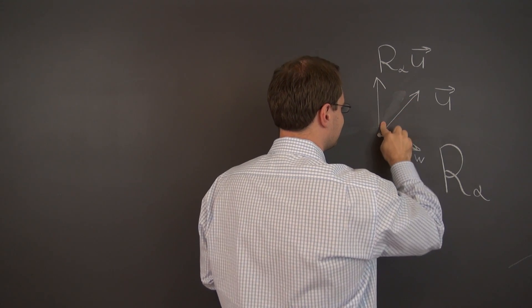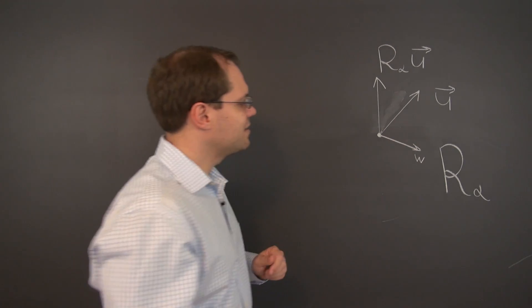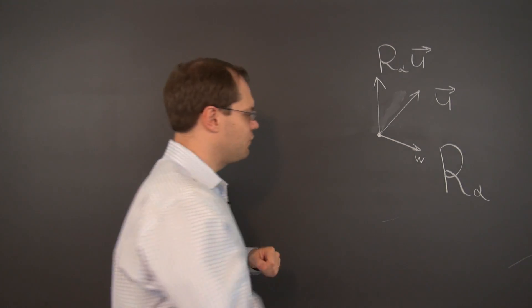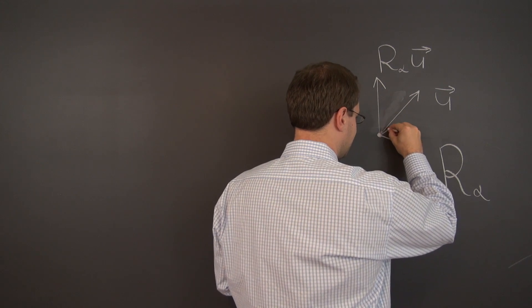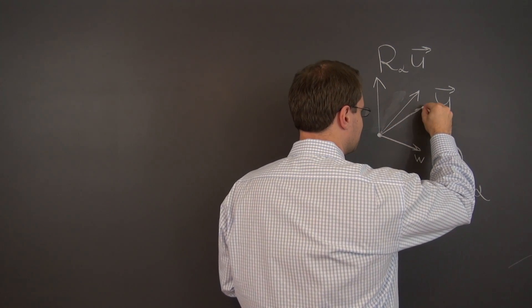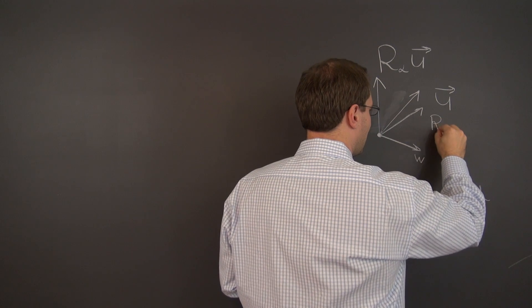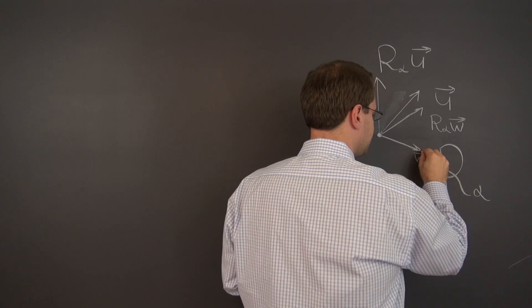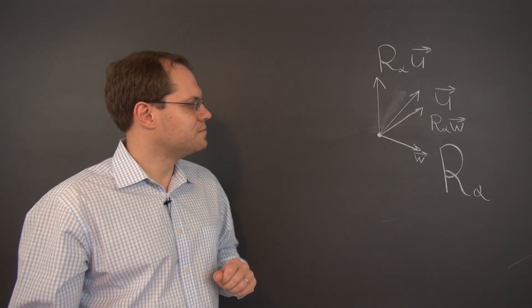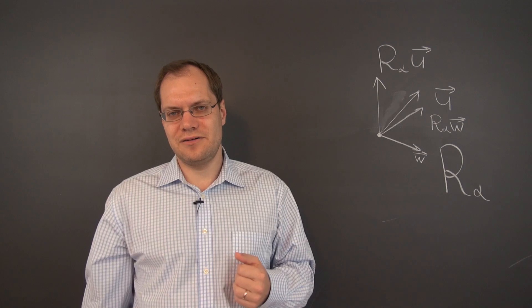This will be our vector w. Now let's rotate the vector w by 45 degrees in this case. So let me be very careful here. I believe that's pretty good. So this is r sub alpha of w. That's what the transformation does. I think it's pretty clear.